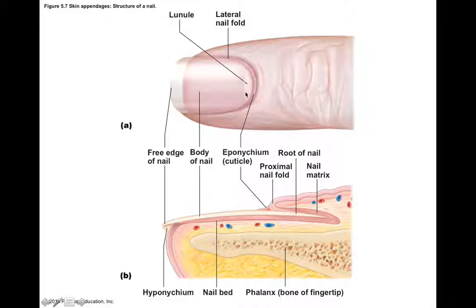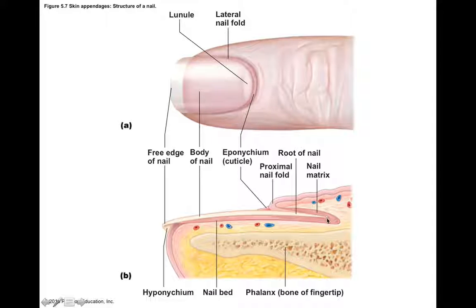The lunule is a thickened patch of matrix. Looking at a cross section, you can see it's superficial to the bone, subcutaneous tissue, and stratified squamous epithelium — this entire region is called the nail bed. The nail itself includes the free edge, the body, and the root, which traces back to the matrix — the site of new nail growth. This is where cells divide and incorporate dead keratinocytes full of hard keratin into the growing nail, which then pushes outward more distally.